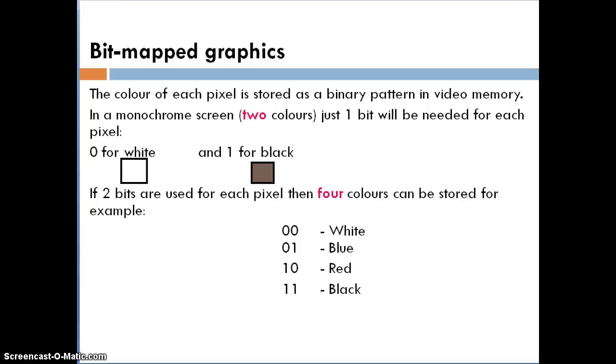When looking at bitmap graphics, we've seen that each pixel has a single color. The color of each pixel is stored as a binary pattern in the video memory. If we're looking at a monochrome screen, then only two colors are used, i.e. white and black. So therefore, there would just be one bit needed for each pixel. A zero could indicate white and one for black. If we wanted to have more than two colors, for example four colors, then we could have two bits per pixel. An example of palette data here is 00 for white, 01 for blue, 10 for red and 11 for black.